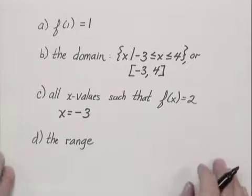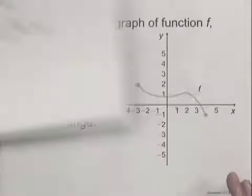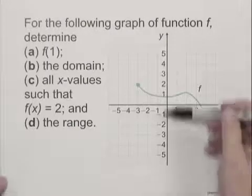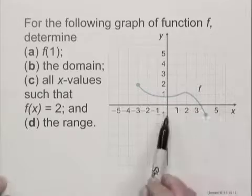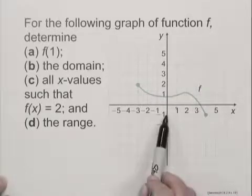And finally, the range. The range corresponds to the y values, the set of all y values in the graph. So we look at the vertical axis, and we can start moving up. And when we get to negative 1 on the vertical axis, we see that there is a point on the graph corresponding to that.